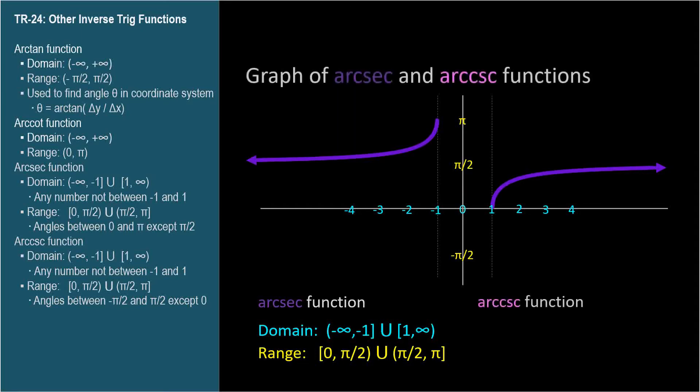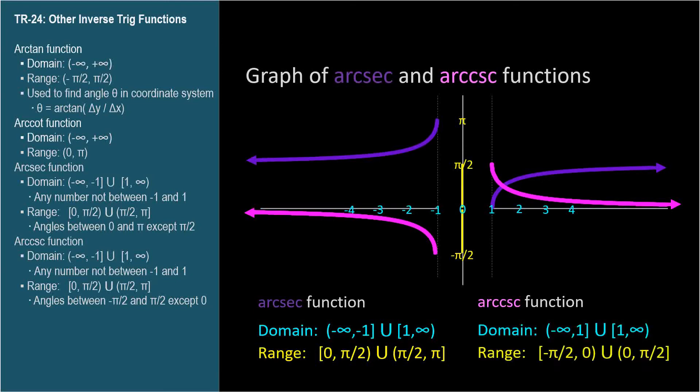Here's the arccosecant function. Its domain is also all numbers except those between negative 1 and 1. And the range is angles from negative pi over 2 radians to pi over 2 radians, except angles 0. The arccosecant function can never be 0 radians, because the sine at 0 radians is 0, and cosecant is 1 over sine.